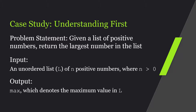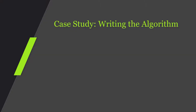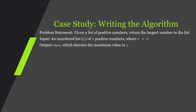We understand the input pretty well. But what about the output? The output is going to be some variable I'll create called max, and that will denote the maximum value that I find in L. Now that we understand the problem a little better — we have our inputs and our outputs — we want to start writing our algorithm. What are the steps to solve this given these inputs and outputs? We have L, an unordered list of n positive numbers where n is greater than zero, and our output max will denote that maximum value in L.